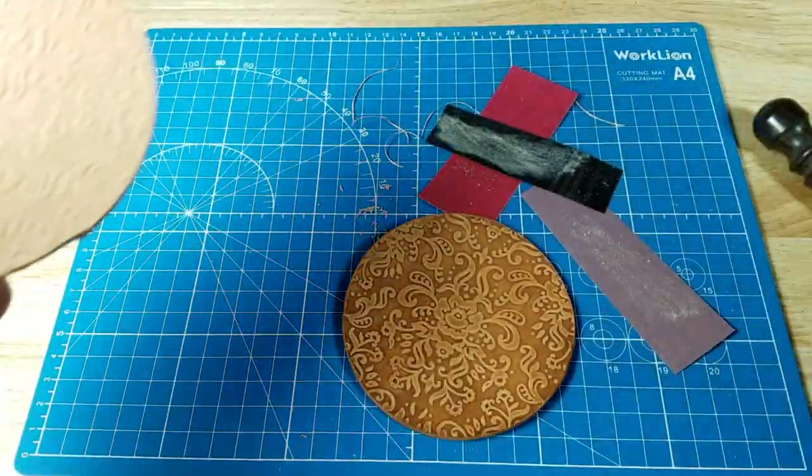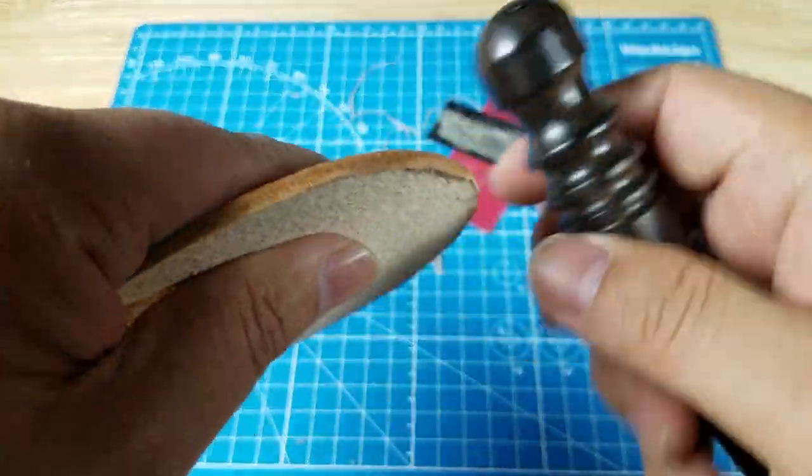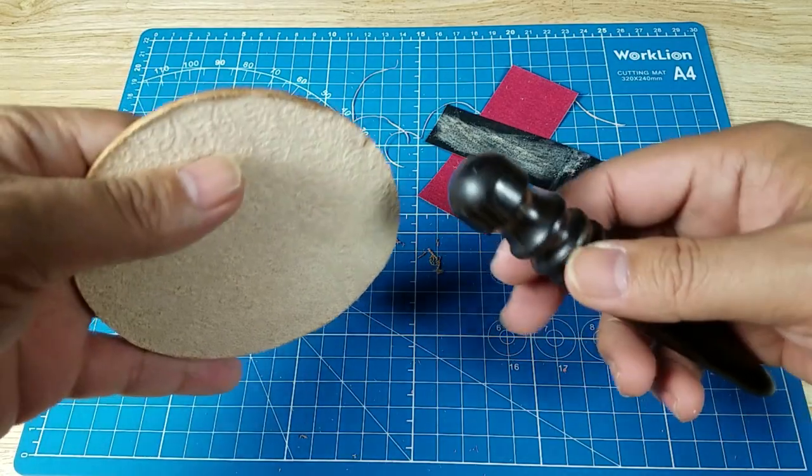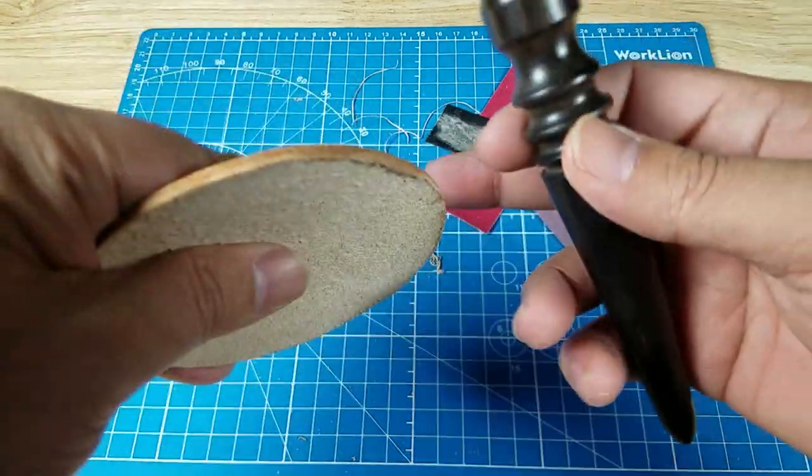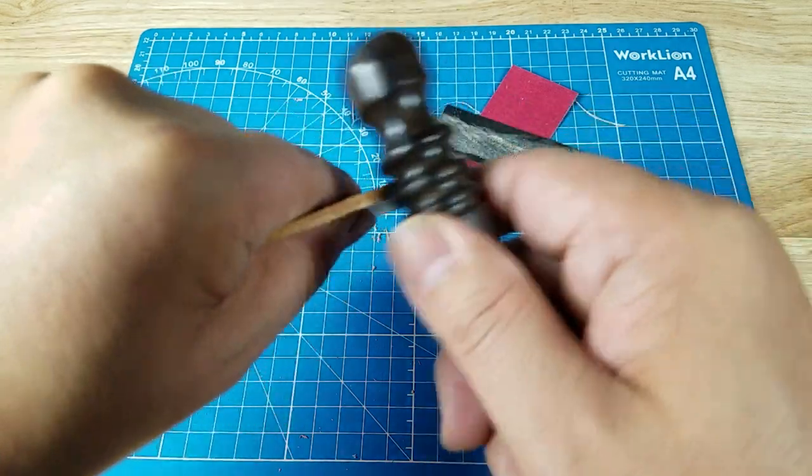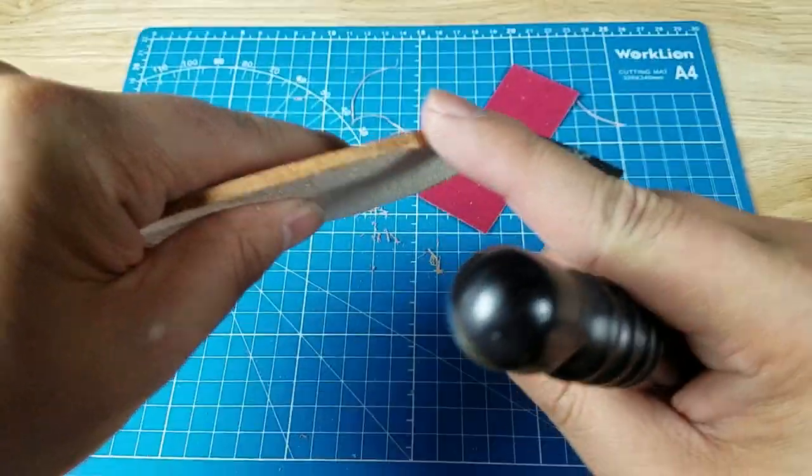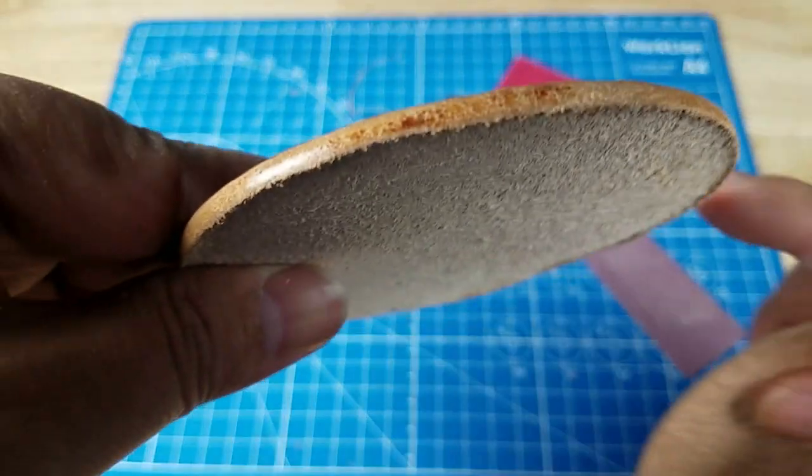This is the first step. I have a set of Dremel bits coming in so I can put it on my rotary tool and it makes this process a lot faster. Let me finish this off and I'll show you what it looks like, then we'll get the leather balm out and finish up the edges.